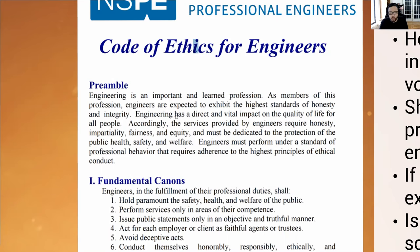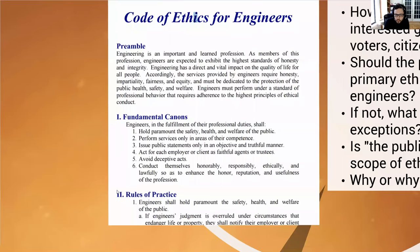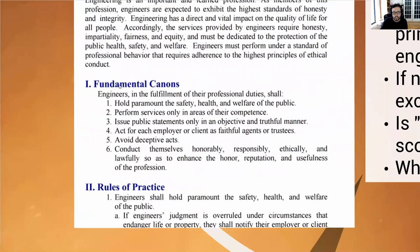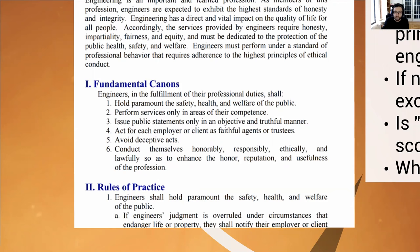The Fundamental Canons are the principles that govern engineering ethics. The rest of the code elaborates on what these canons mean in specific situations. The Fundamental Canons state that engineers, in the fulfillment of their professional duties, shall: one, hold paramount the safety, health, and welfare of the public; two, perform services only in their area of competence; three, issue public statements only in an objective and truthful manner; four, act for each employer or client as a faithful agent and trustee; five, avoid deceptive acts; and six, conduct themselves honorably, responsibly, and ethically and lawfully so as to enhance the honor, reputation, and usefulness of the profession.